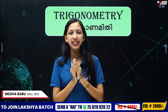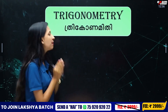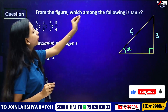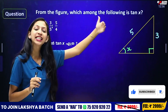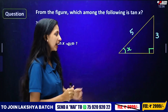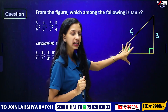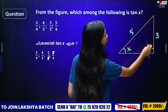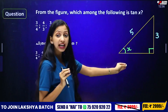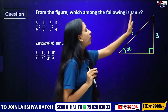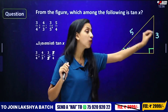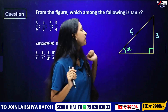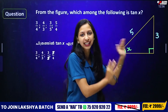Let's examine the first question. From the figure, which among the following is tan(x)? We have a right triangle with a right angle. The triangle has sides of 4 inches, 3 inches, and 5 inches — a 3-4-5 right triangle.